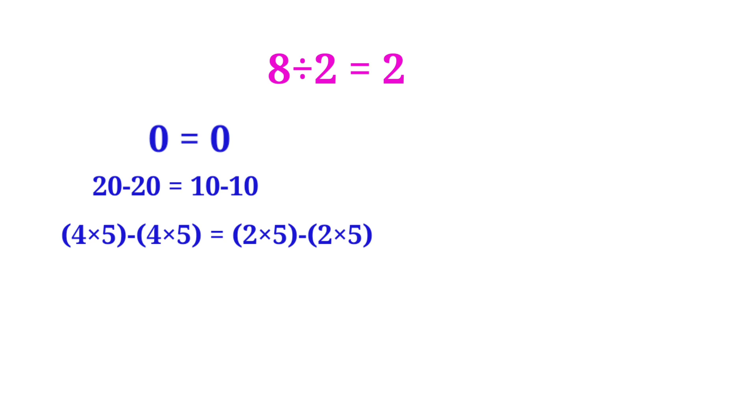Now we can write the 20 as 4 times 5, and the another 20 also 4 times 5. And we can write the 10 as 2 times 5, and the another 10 also 2 times 5.